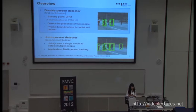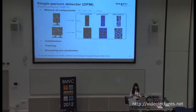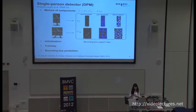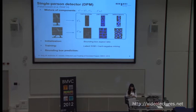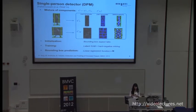First, I will talk about our double-person detector. DPM uses a mixture of components initialized by bounding box aspect ratios. For training, they use the latent SVM algorithm and also do mining for hard negative examples. In the end, they learn linear regression functions for each component to get more precise detections.